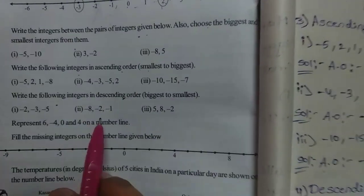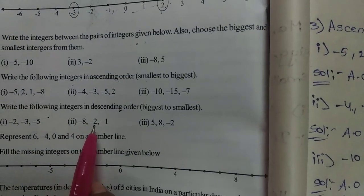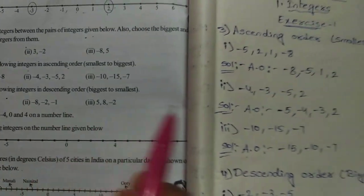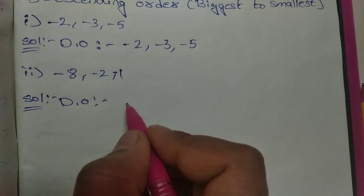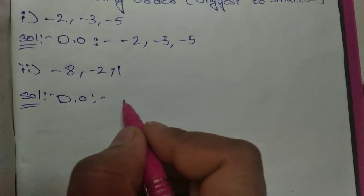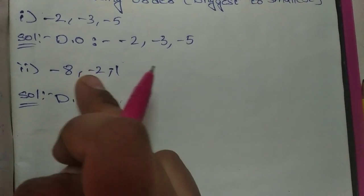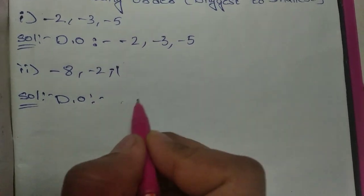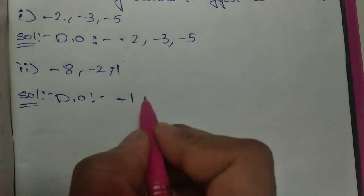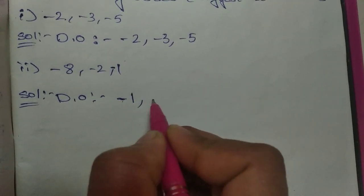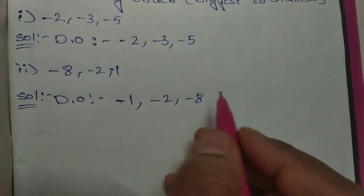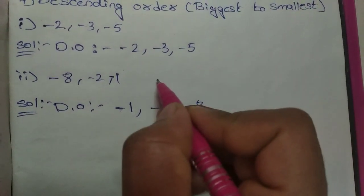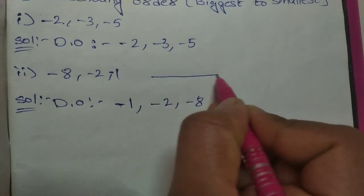Next, second question for descending: minus eight, minus two, minus one. Descending order — what is the biggest integer? Minus eight, minus two, or minus one? Yes, minus one is the biggest integer. After that minus two, after that minus eight.